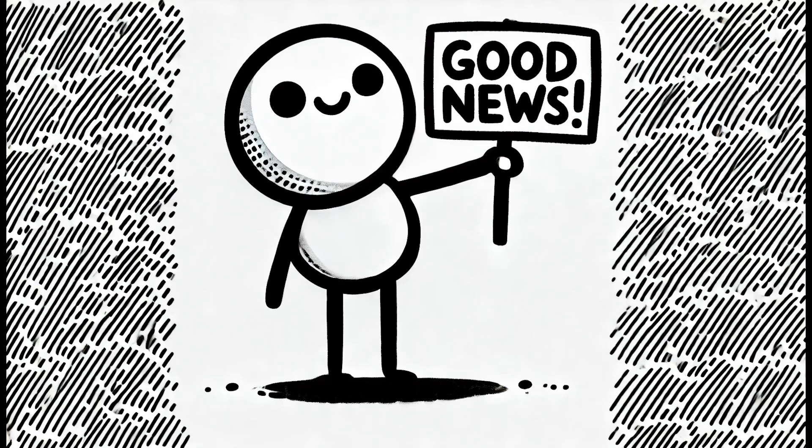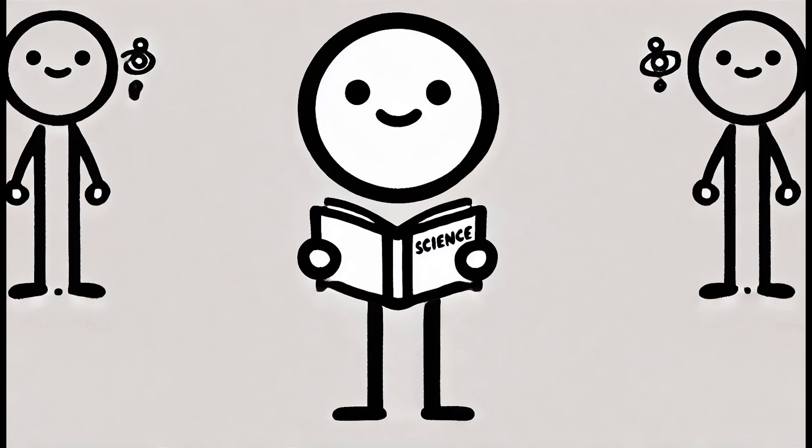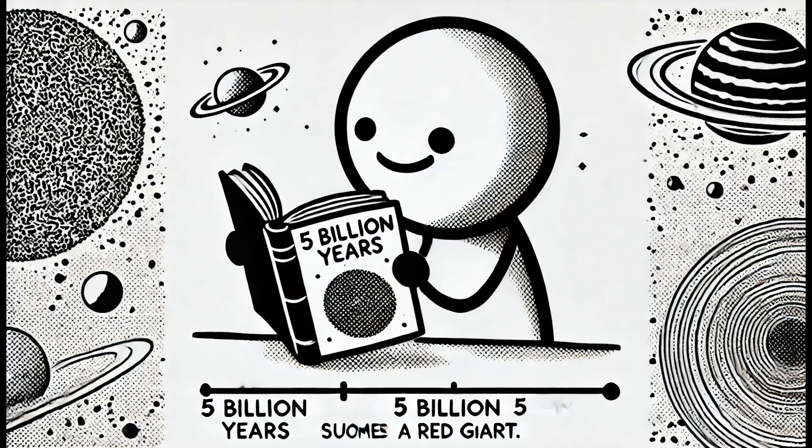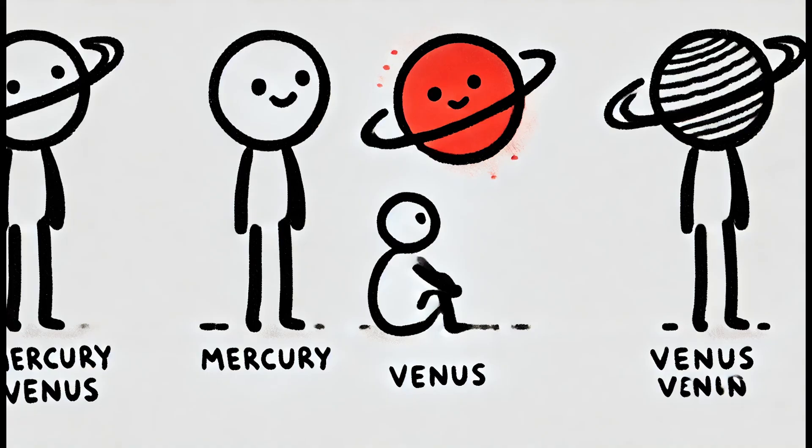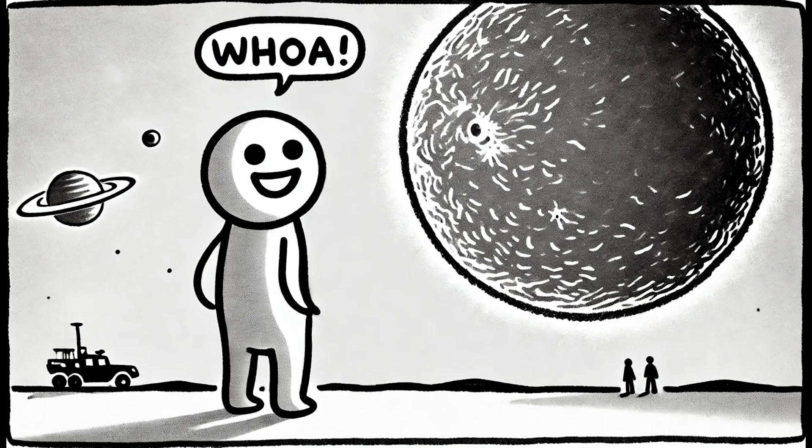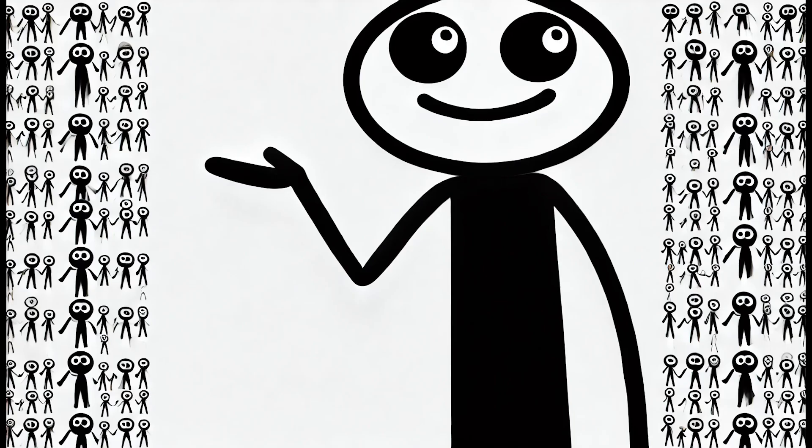But here's the good news. The sun isn't going to explode anytime soon. In fact, scientists say it's got about 5 billion years left before it even starts to run out of fuel. When that happens, the sun won't explode like a bomb. Instead, it'll swell up into a red giant gobbling up the inner planets. Sorry, Mercury and Venus. And then shrink down into a white dwarf, a tiny, dense star that will quietly fade away. So we're safe for now.